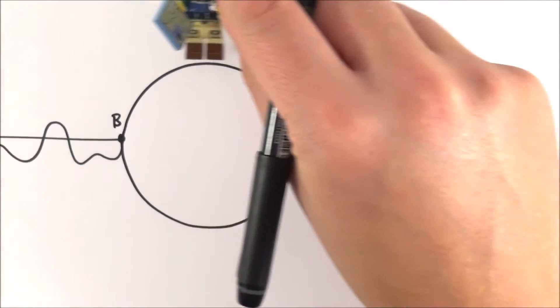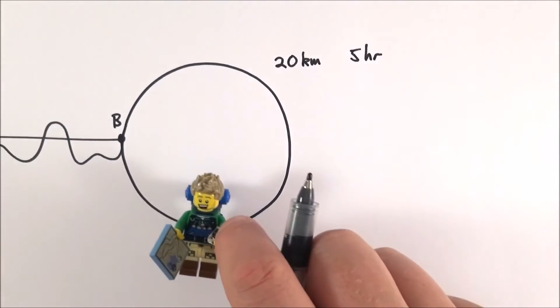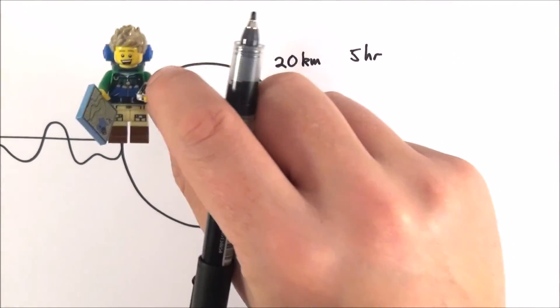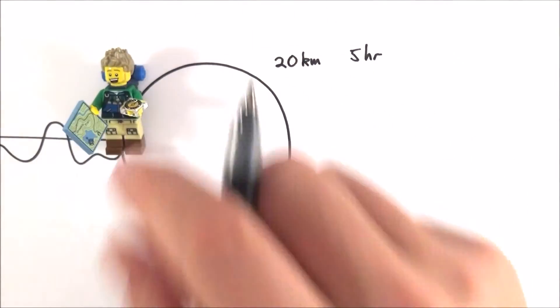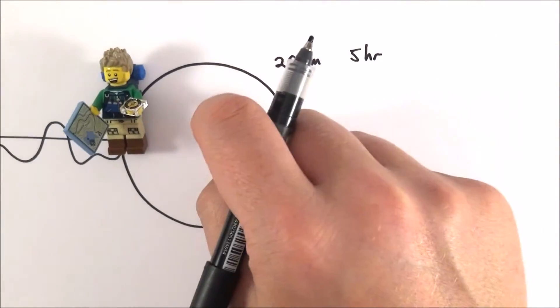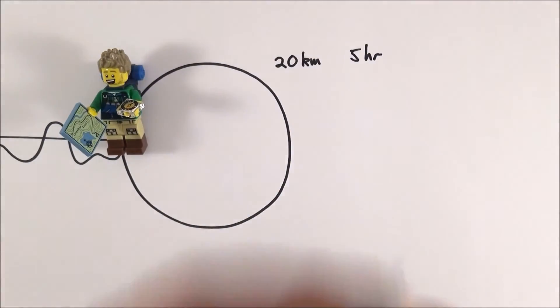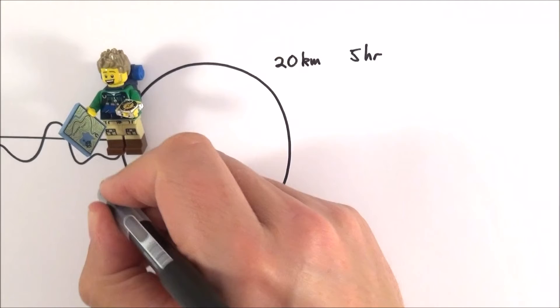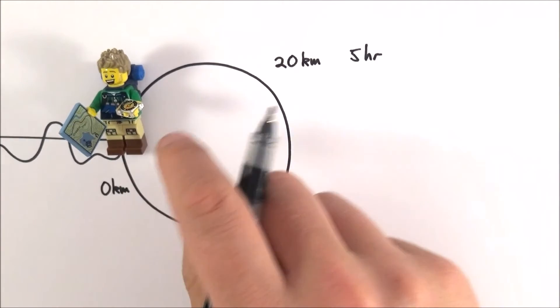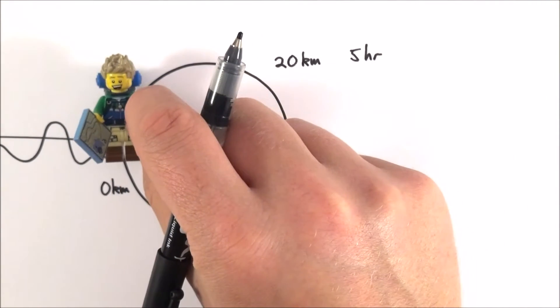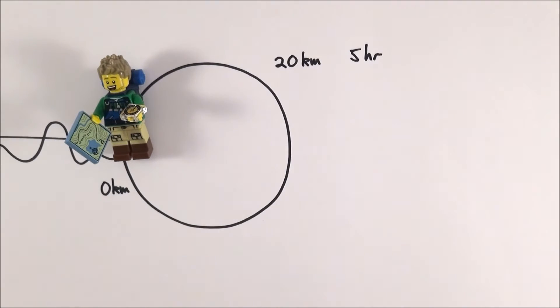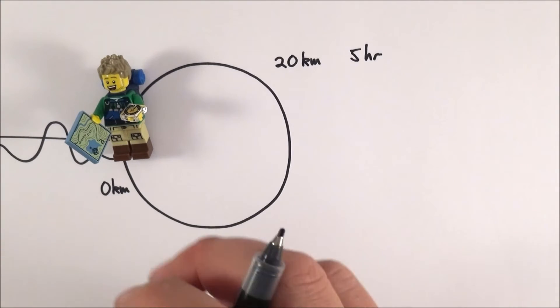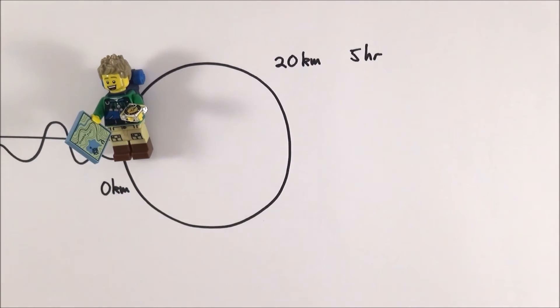So the distance that they walk is 20 kilometers and five hours later they arrive back at camp B. Now the thing is although they've walked 20 kilometers their displacement at the end is equal to zero kilometers because it's no further away from where they started. And this is where you've got to be quite careful about looking at distance and displacement.